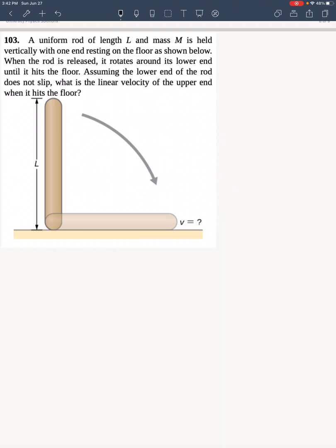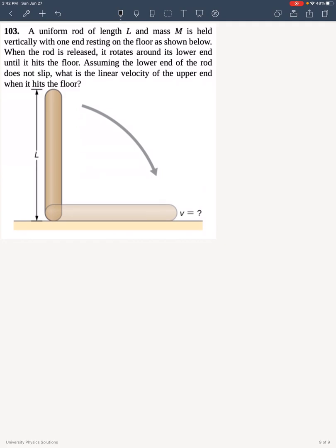This is problem 103 from OpenStax University of Physics, Chapter 10. A uniform rod of length L and mass M is held vertically with one end resting on the floor as shown below.